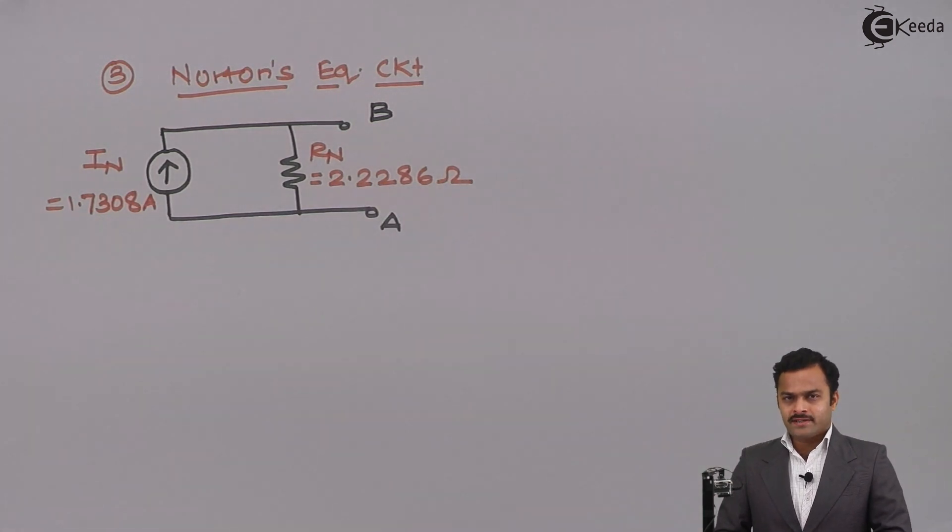Since load resistance is not given, no need to perform step number four. So this will be our final answer where we have replaced the entire circuit by a simple current source with a resistance across it. In subsequent videos we will see more numericals based on Norton's theorem. Thank you.